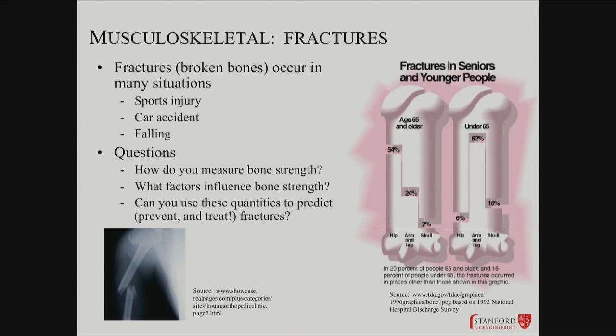Cortical and trabecular bone have different strengths and different susceptibility to fracture. There's a huge discrepancy in where fractures appear depending on age. If you're over 65, almost all fractures occur in the hip. If you're under 65, they're almost all in arm and leg — related to increased risky behavior. The hip joint itself, particularly at the ball-and-socket joint, is quite susceptible to weakening as people get older. This raises questions: how do you measure bone strength? What factors influence it? How does it deteriorate over time? And can we predict, prevent, and treat fractures?